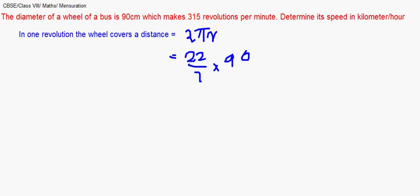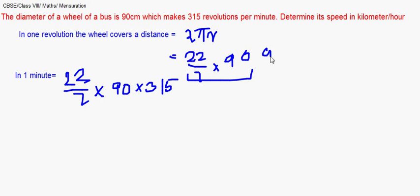So it is 22 by 7 into 2r is d so that is 90. This is in one revolution. But in one minute it makes 315 revolutions. So in one minute it will be traveling 22 by 7 into 90 into 315. And in 60 minutes we have to find because we have to find the speed per hour.